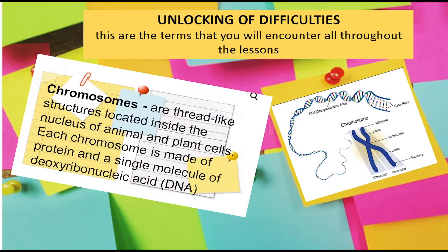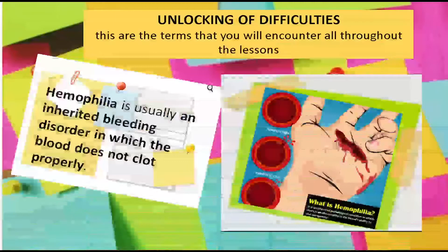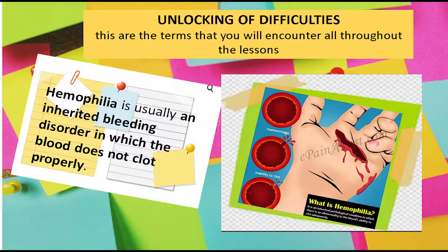Before we proceed, let us start with unlocking difficulties. These are the terms you will encounter throughout the lessons. Chromosomes are thread-like structures located inside the nucleus of animal and plant cells. Each chromosome is made up of protein and a single molecule of deoxyribonucleic acid, or DNA. Offspring, in biology, are the young of living organisms produced either by a single organism or, in the case of sexual reproduction, by two organisms. Autosomal means they are not found on the X and Y chromosomes. Hemophilia is usually an inherited bleeding disorder in which the blood does not clot properly.